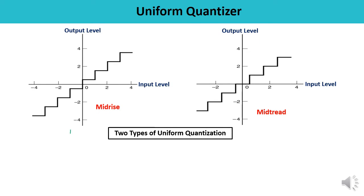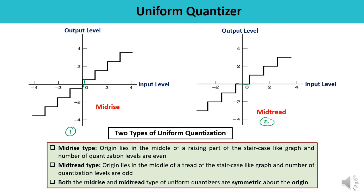Looking at the diagrams: in the mid-rise type, you can observe that the origin lies in the middle of the rising part of the staircase, while in the mid-tread type, the origin lies in the middle of the tread of the staircase-like graph. In both cases — whether mid-tread or mid-rise type of uniform quantization — they are symmetric about the origin, as visible in both diagrams.